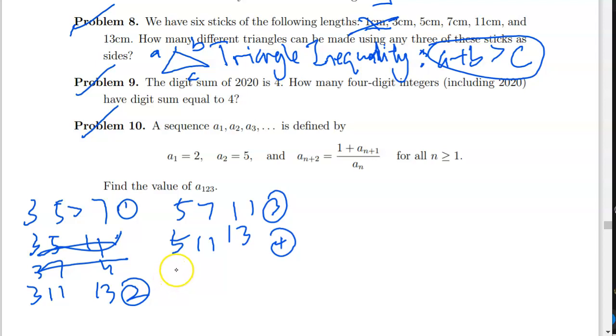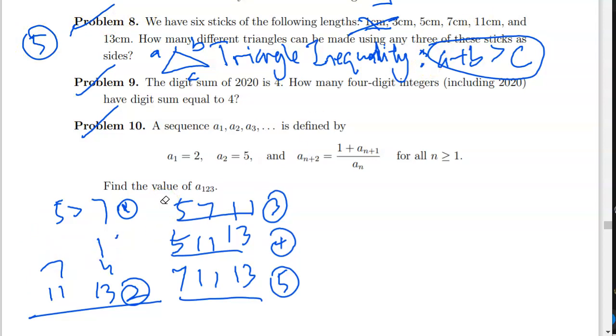And then for the last one, seven, eleven, and thirteen. This one also obviously seven plus eleven exceeds thirteen. So this is our fifth triangle. And if you try a few more, you will see that you'll just be stuck with these five combinations. So our answer for problem eight is actually five. So here, take it. Just jot down.